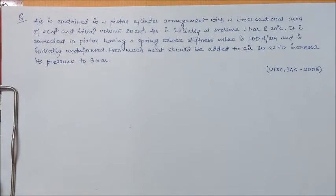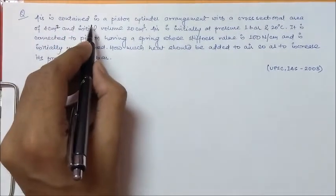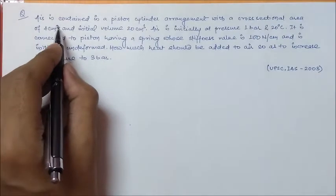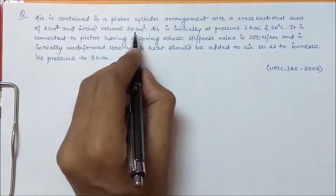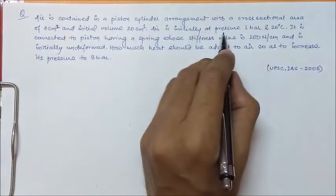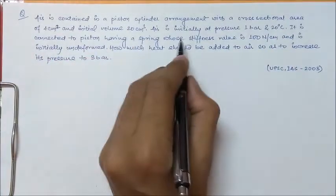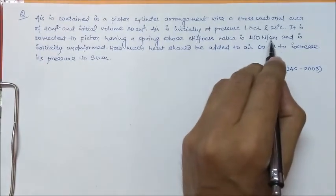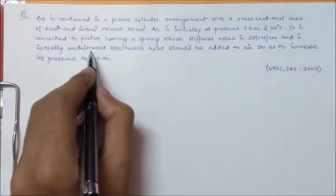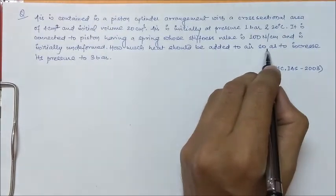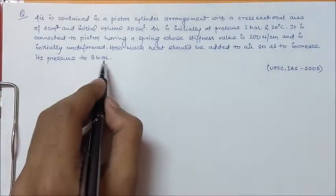In this video, we have taken a question that has been asked in UPSC IES exam in 2003. The question is: Air is contained in a piston-cylinder arrangement with a cross-sectional area of 4 cm² and initial volume 20 cm³. Air is initially at pressure 1 bar and 20 degree celsius. It is connected to a piston having a spring whose stiffness value is 100 N per cm and is initially deformed. How much heat should be added to air so as to increase its pressure to 3 bar?